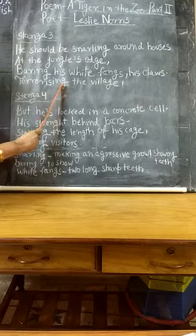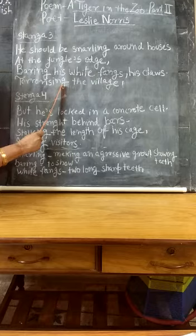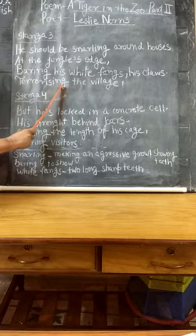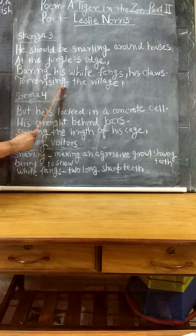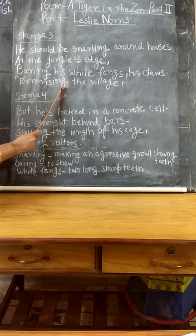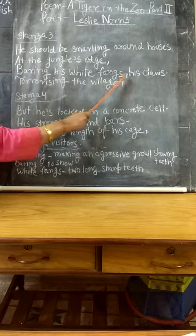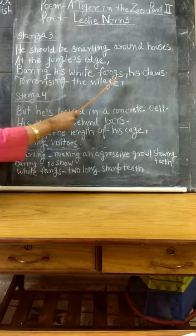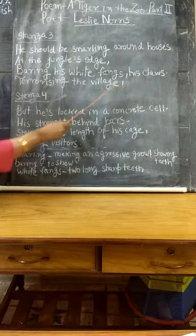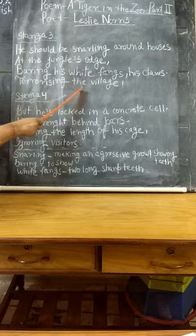So had he not been bound in his cage, the tiger would have been roaming around freely. He should have been growling around the houses of the human settlement, at the outskirts of the jungle. There he would have opened out his sharp long white teeth and paws just to terrorize the villagers. If he would have been free in the jungle, then he would have created terror in the hearts of the villagers by showing his sharp claws — this is the activity he would have performed while in the jungle.